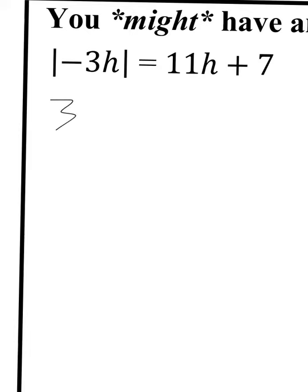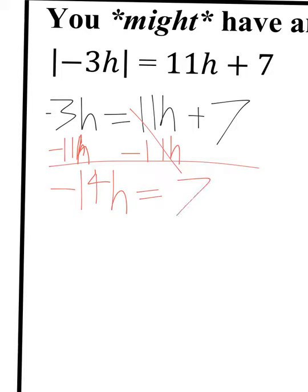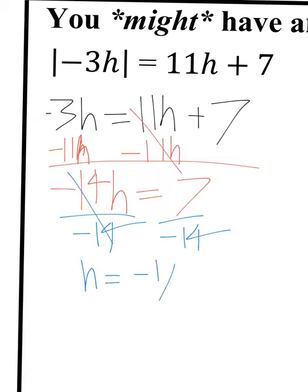You're going to solve these the same way we've been doing them — just solving it like normal without the absolute value bars. I need to get my H's on one side, so I'm going to minus 11H to the left-hand side, and that's going to get me negative 14H equals 7. So divide both sides by negative 14, and I get H equals negative 1 half.